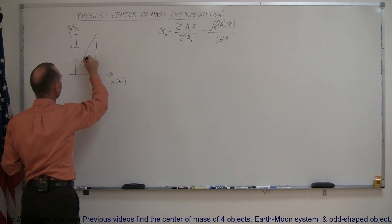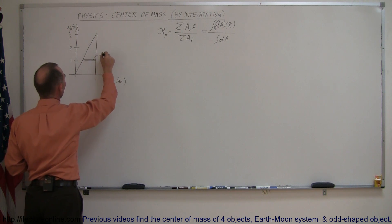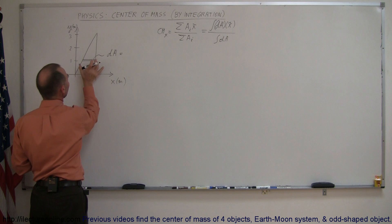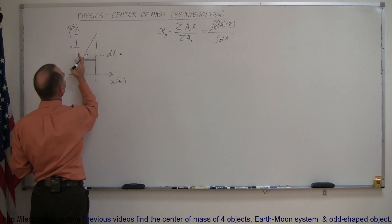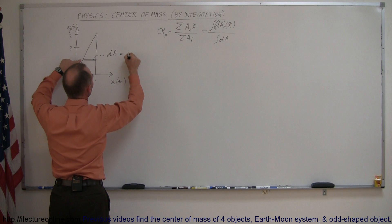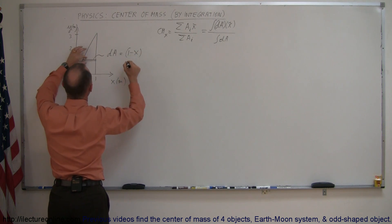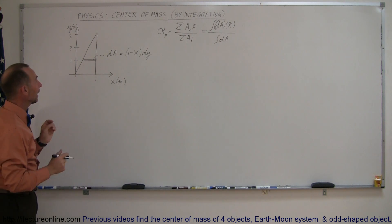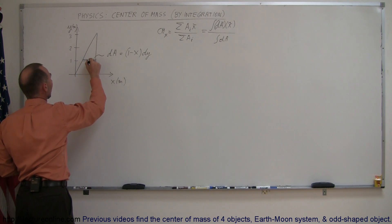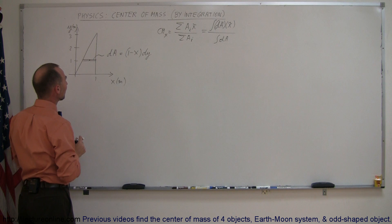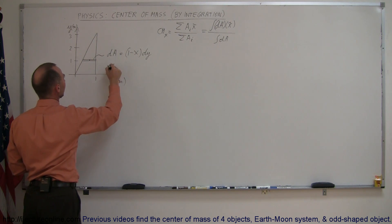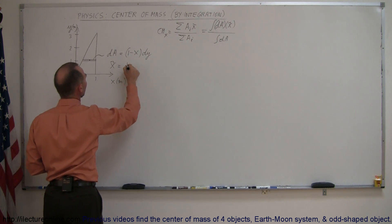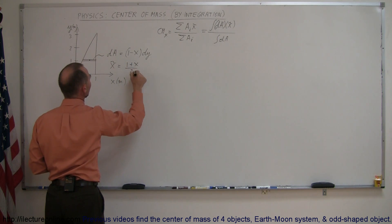We go ahead and take a little slice, and this is now going to be called our dA. Our dA is going to be equal to the length of this, which is 1 minus the x position on that line — so it's 1 minus x — times the height of that little line segment, which is dy. And the x-coordinate of the center mass of that area, the x-tilde, can be defined as the sum of these two divided by 2, so 1 plus x divided by 2.